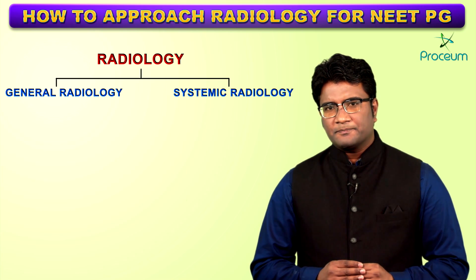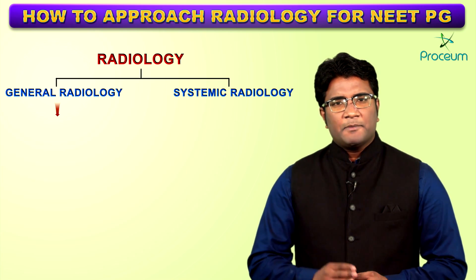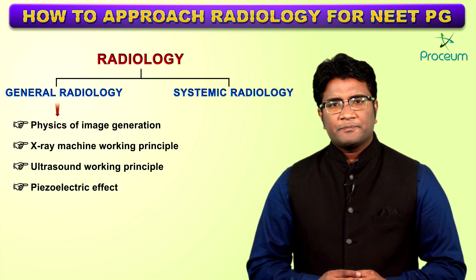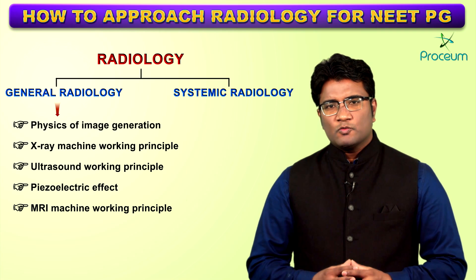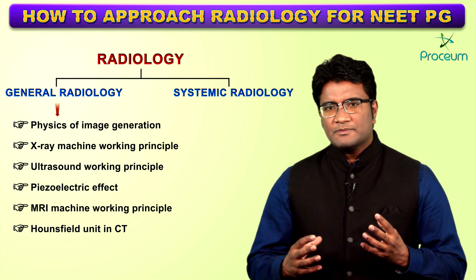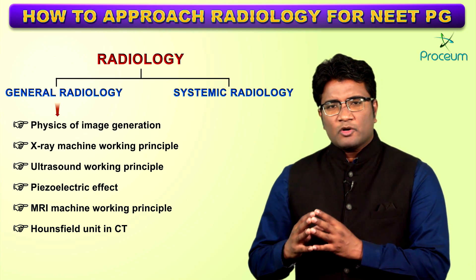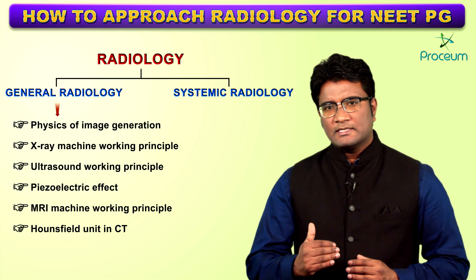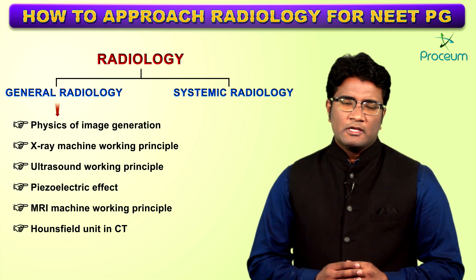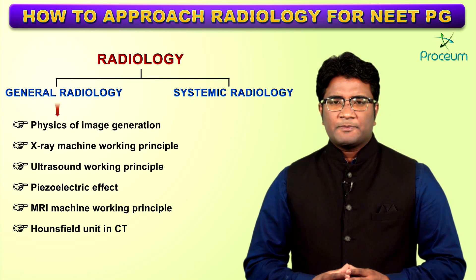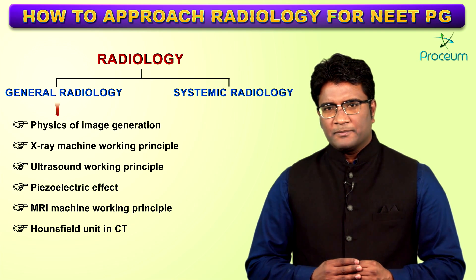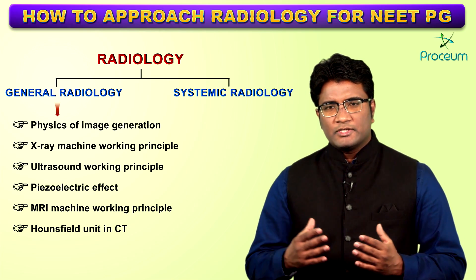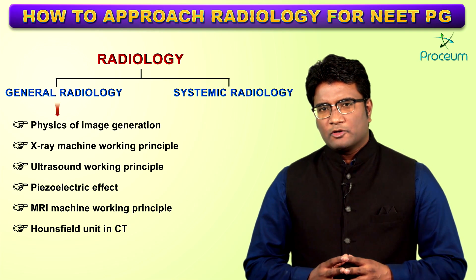We'll approach radiology in two parts: general radiology and systemic radiology. In general radiology, we'll discuss the physics of image generation — how an X-ray machine works, what is the piezoelectric effect in ultrasound, how images are captured using an MRI machine, and what is a Hounsfield unit in CT. Once we understand these basic terms and terminologies, we will understand how various anatomical structures appear on imaging. In general radiology, try to concentrate on how structures appear, why one modality is preferred over another, and how various lesions appear.